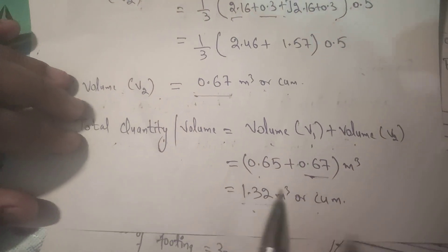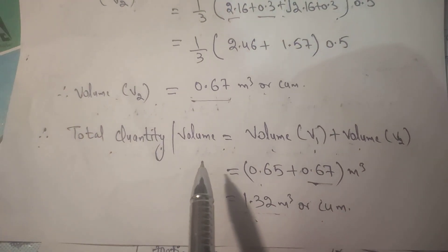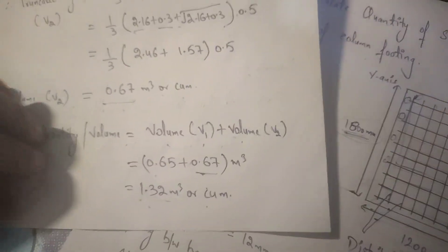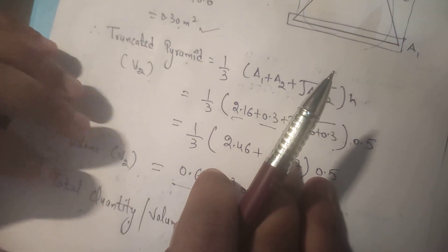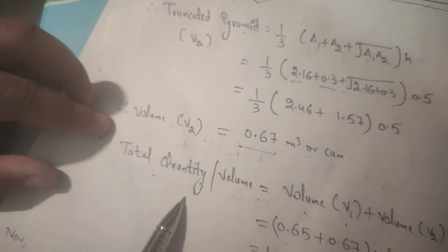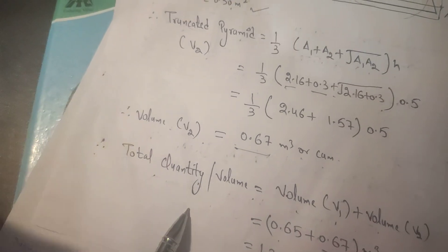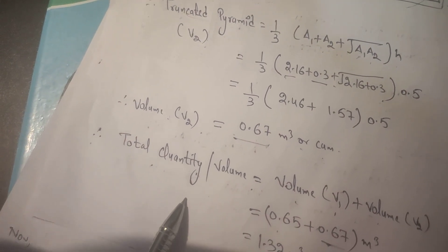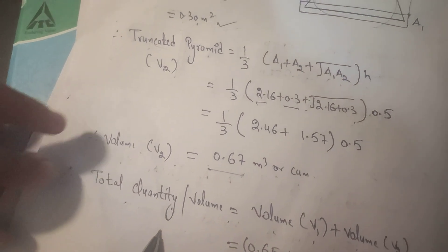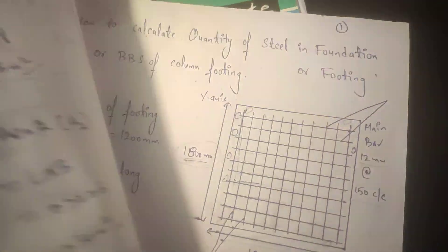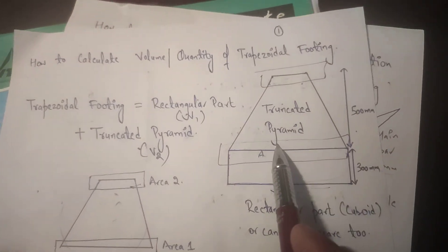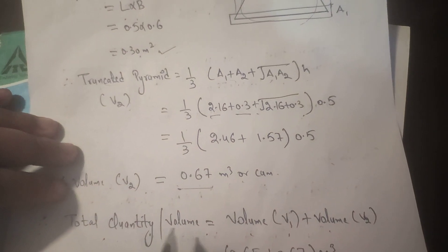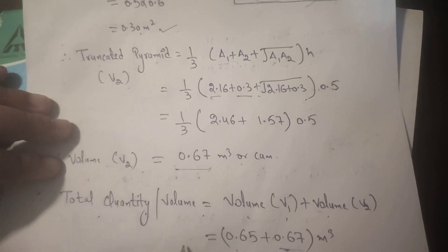I have also told you how to calculate the number of bars and quantity of steel in the previous video — you can check that out for how to calculate quantity of steel for footings. This was how to calculate volume or quantity for trapezoidal footing. Thank you so much, please subscribe to the channel.